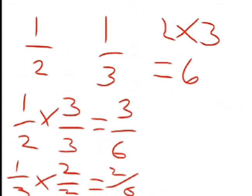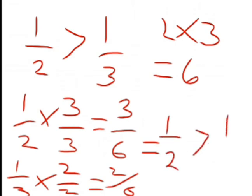Now look at those answers: three over six and two over six — which one is bigger? Obviously, three over six is bigger than two over six. So going back to the original question, one over two is greater than one over three. Final answer: one over two is greater than one over three.